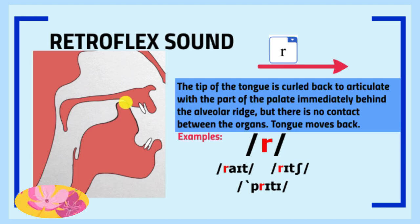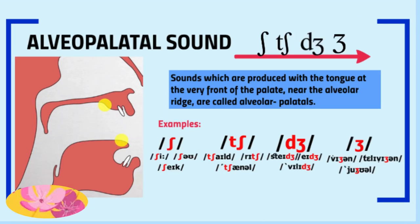Retroflex sound is a sound from the tip of the tongue when it is curled back to articulate with the part of the palate immediately behind the alveolar ridge, but there is no contact between the organs — the tongue moves back. The letter is R. Alveopalatal sounds are produced with the tongue at the very front of the palate near the alveolar ridge. Sounds like CH, SH, and J give us this sound.